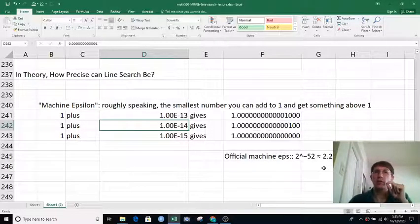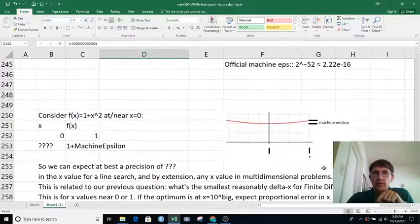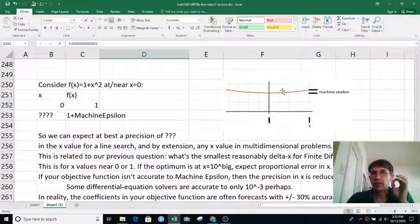So that's how different two objective function values can be. But what does that tell us about the x values we're using to optimize? Let's consider a function like 1 plus x squared near x equals zero.